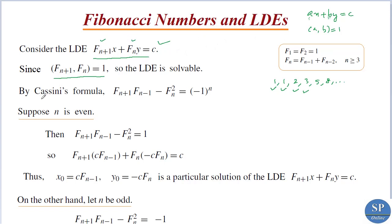Now, by Cassini's formula we have fn+1 times fn-1 minus fn squared is equal to (-1)^n. Suppose n is even. If n is even, we have (-1)^n equal to 1.